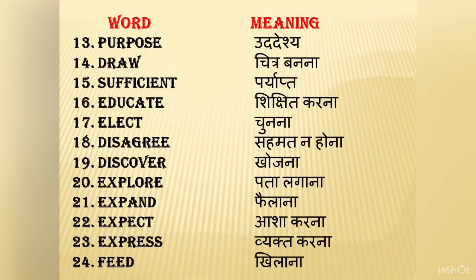You can see we are taking all those words which are used in everyday conversation. If you find this video informative, please keep liking it. Educate means shikshit karna. Girls are being educated — girls ko shikshit kiya ja raha hai. Elect means chunna — to choose. They have elected him as the chairman. Disagree means sahmat na hona — to not agree. Discover means khojana — to find out. Vasco da Gama discovered India in 1498. Explore means pata lagana — to find out or investigate. You should explore new aspects. You should explore new medicine.